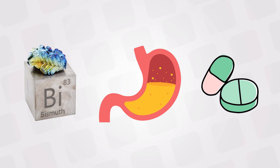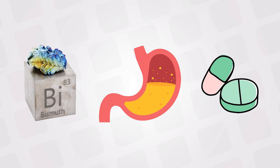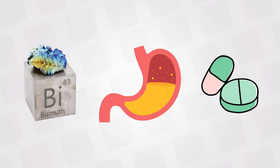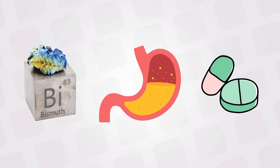Bismuth, on the other hand, binds to the ulcer itself and enhances the secretion of bicarbonate. This bicarbonate creates a protective alkaline area, which protects the ulcer from the acidic environment and allows it to heal.